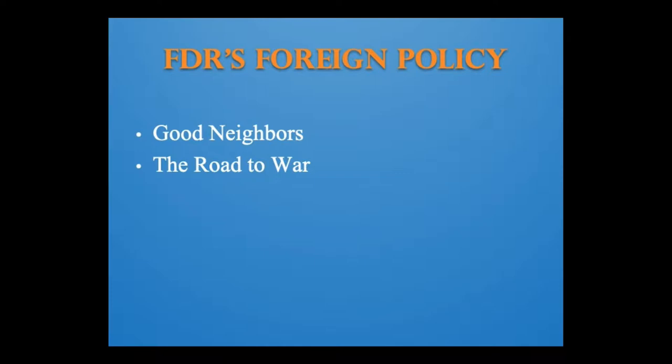Events in Asia and Europe quickly took center stage as international order and the rule of law seemed to disintegrate. In 1931, seeking to expand its power in Asia, Japan invaded Manchuria, a northern province in China. In 1937, it pushed further, committing a massacre of 300,000 Chinese prisoners of war and civilians at Nanjing.